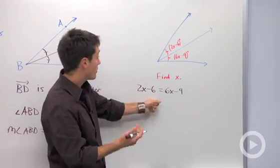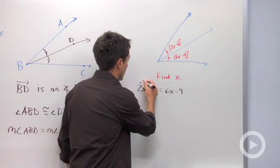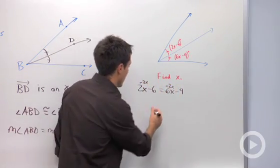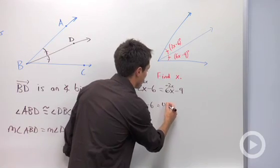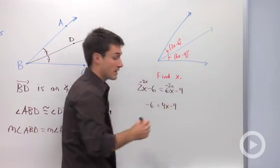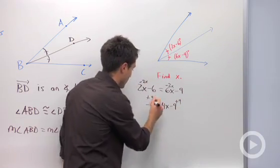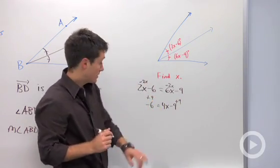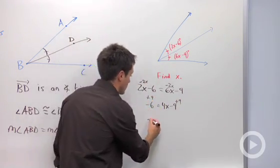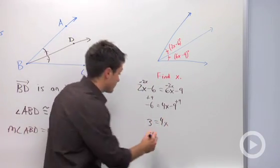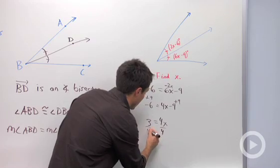So to solve this, just remembering what we did in algebra, we would subtract 2X from both sides. And we would have negative 6 is equal to 4X minus 9. And then we would add 9. So positive 9 and negative 6 is positive 3. And last we would divide. X is 3 fourths.